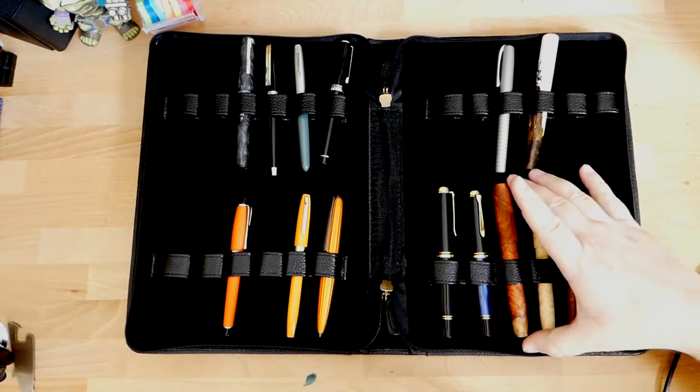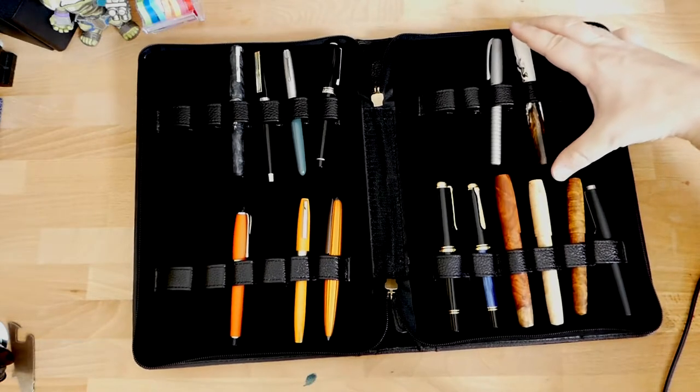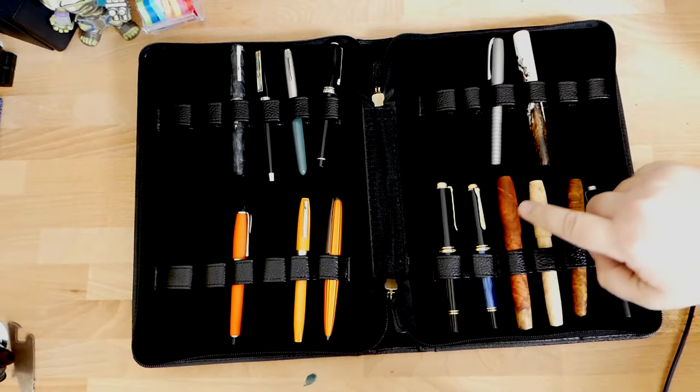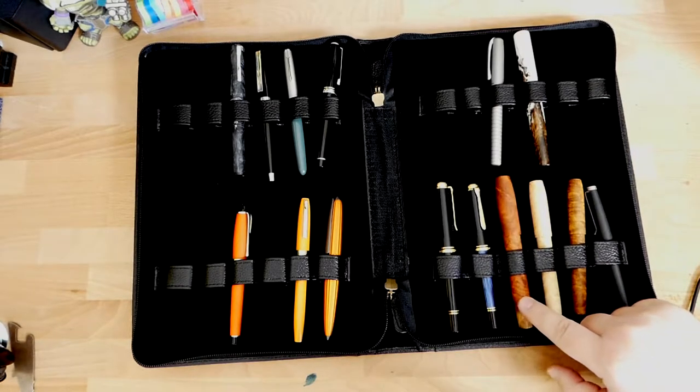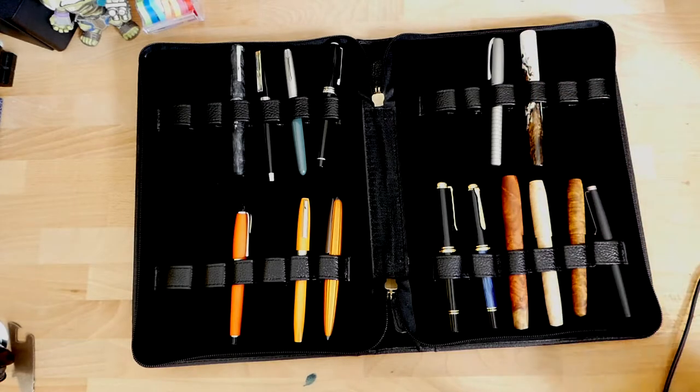If you have big fat pens like this Ryan Krusac L16, this is a massive pen. This Kanalea Monakia, which is a pretty big pen but not quite as big as this L16. This is a massive pen, man. This is just in the large leather loop, and so is this one. So there you go.